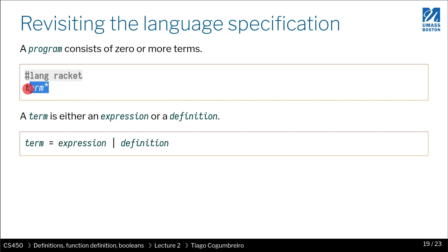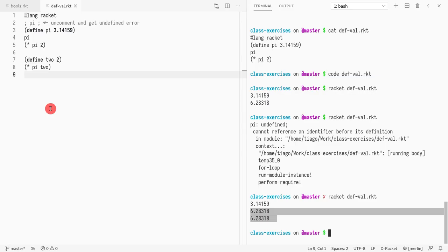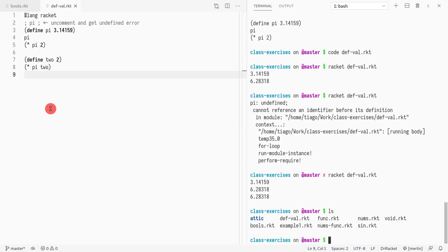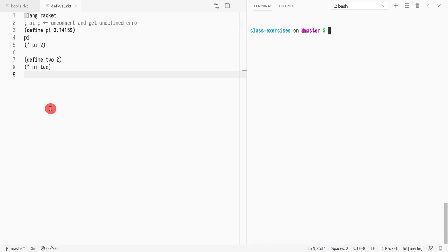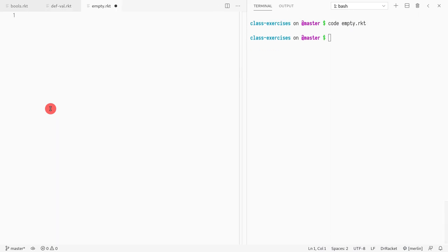You might have wondered even before, because before a program was zero or more expressions and now a program is zero or more terms. So what happens when you just write a program with zero expressions? What would that be?